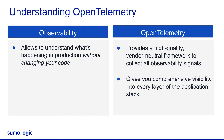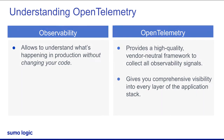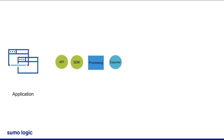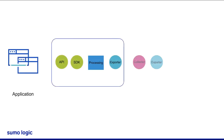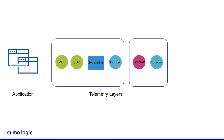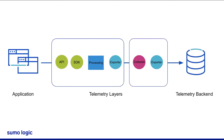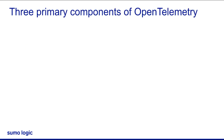It gives you comprehensive visibility into every layer of the application stack. OpenTelemetry is a collection of tools, APIs, and SDKs that you can use to instrument, generate, collect, and export all machine data. It consists of the following primary components.